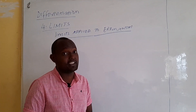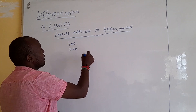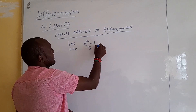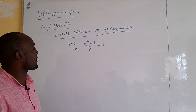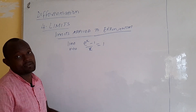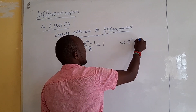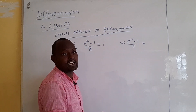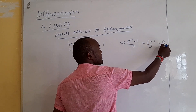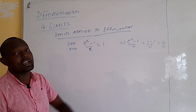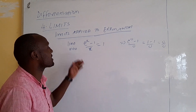We look at limits applied to exponentials. If you have the limit as x approaches 0 of (e^x - 1)/x, this equals 1. By direct substitution, e^0 minus 1 over 0 gives 0 over 0, so it is hard to see why the answer is 1 — direct substitution gives us 0 over 0.